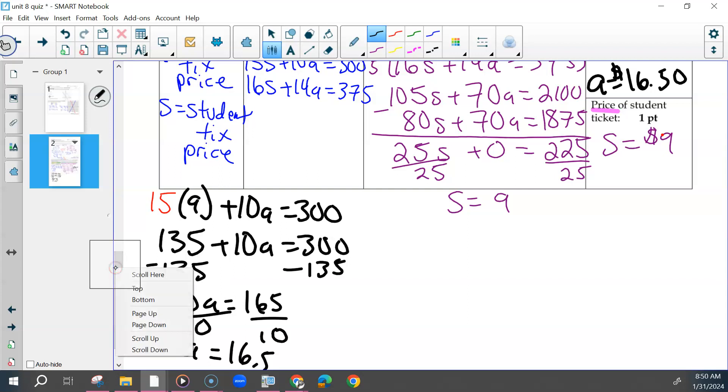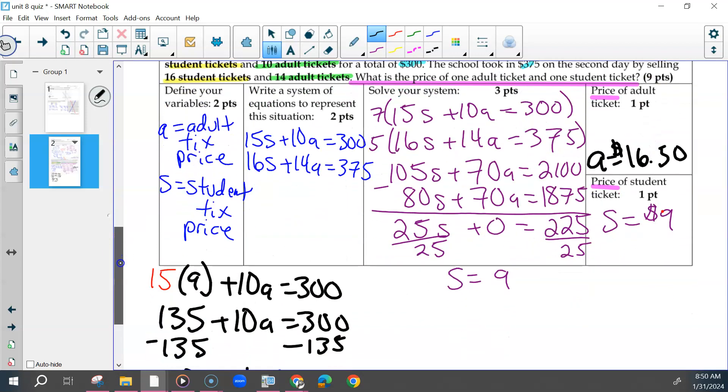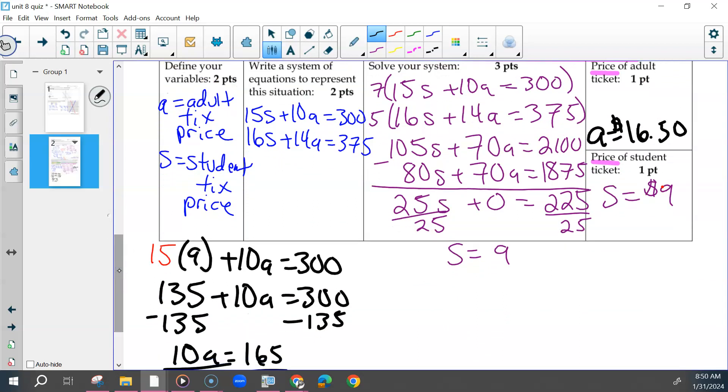So then in the solving piece, the points there were: did you set up your substitution or elimination correctly? Solve for one of the variables and solve for the other variable, and then the last two points for your final answers. Questions on any of the word problems?